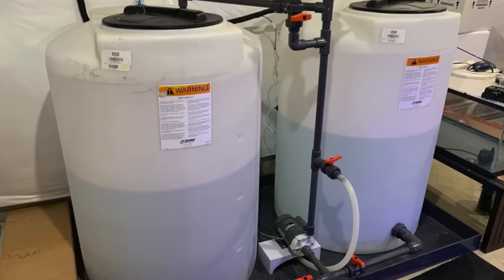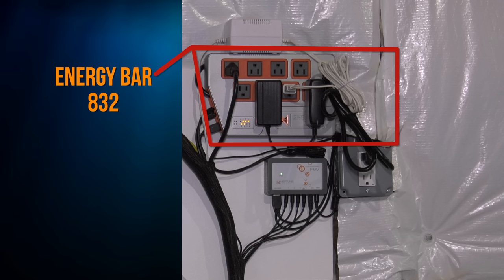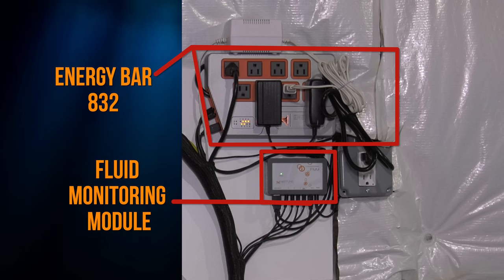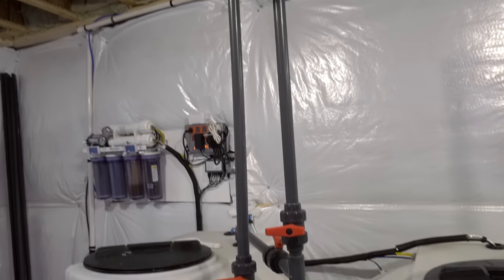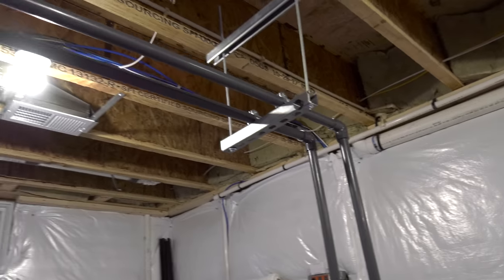Here's how that works. There are two main pieces of Neptune Systems gear that control the mixing station: an Energy Bar 832 and an FMM module. Note that these units are connected to the display tank's Apex frame.